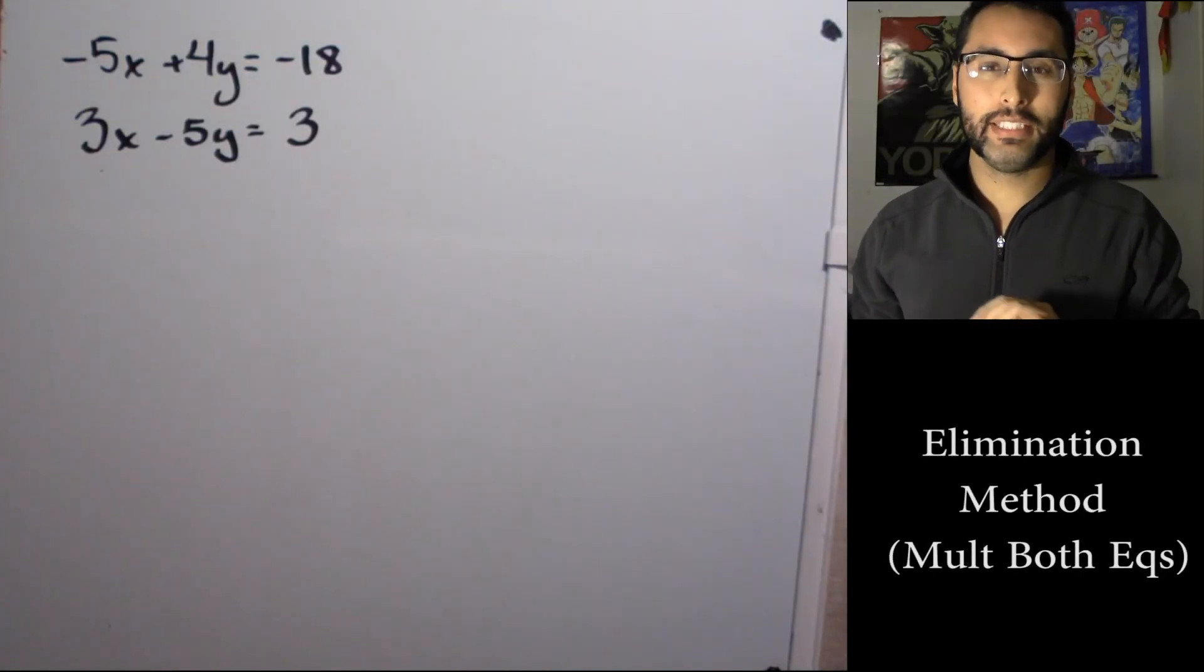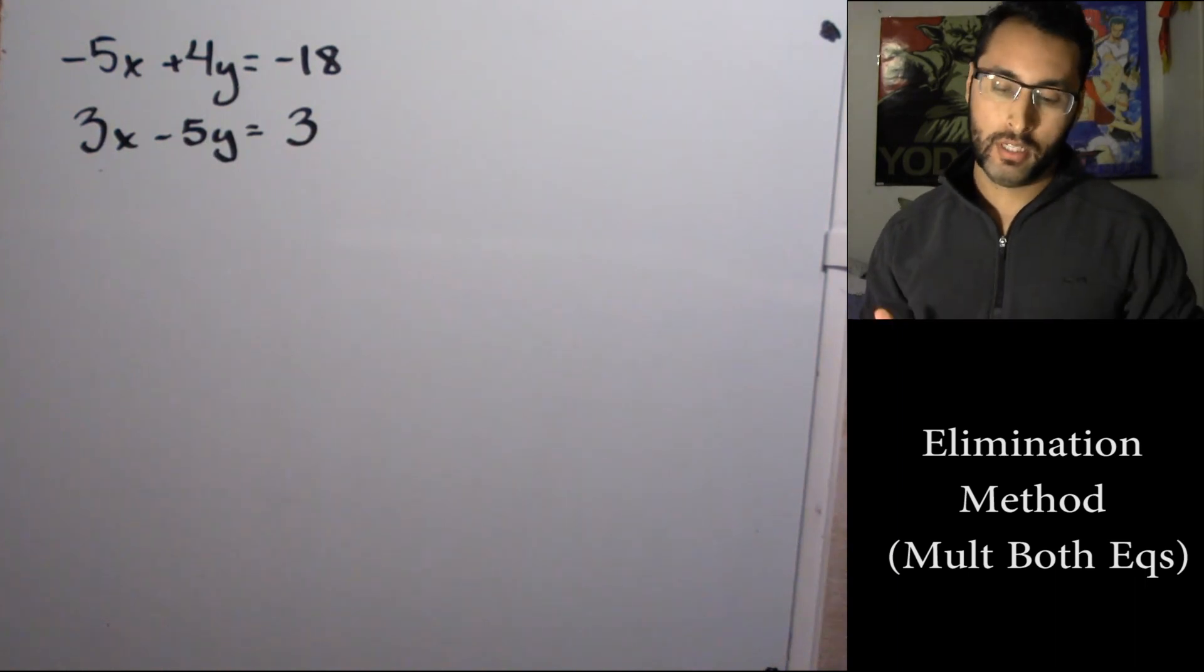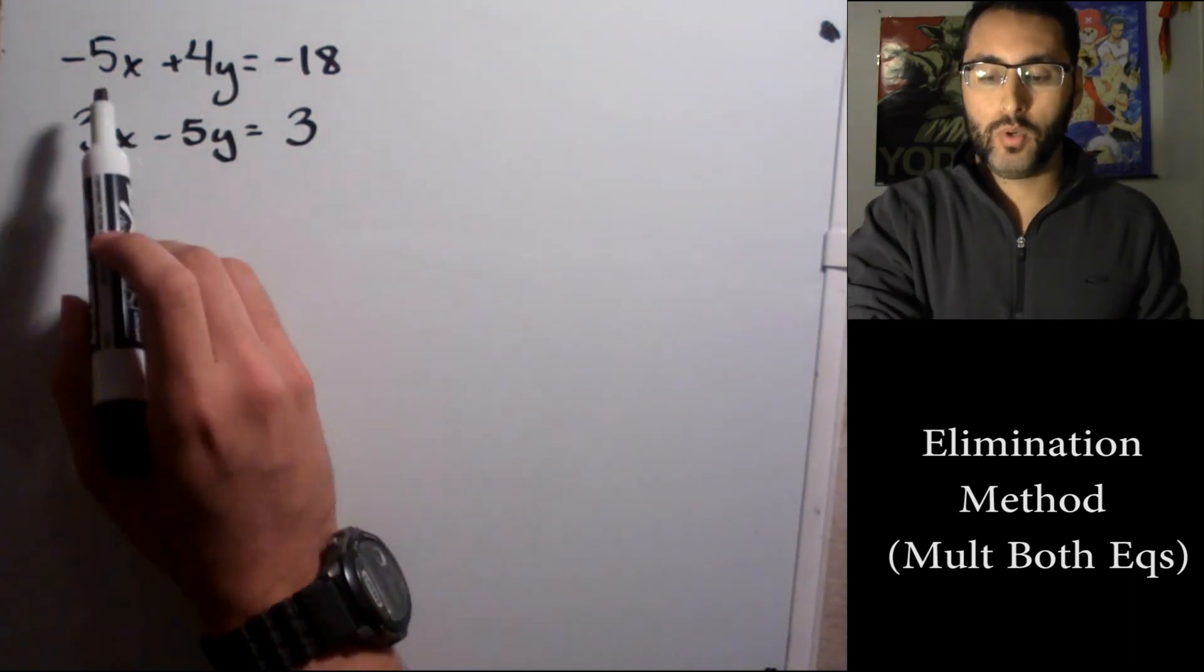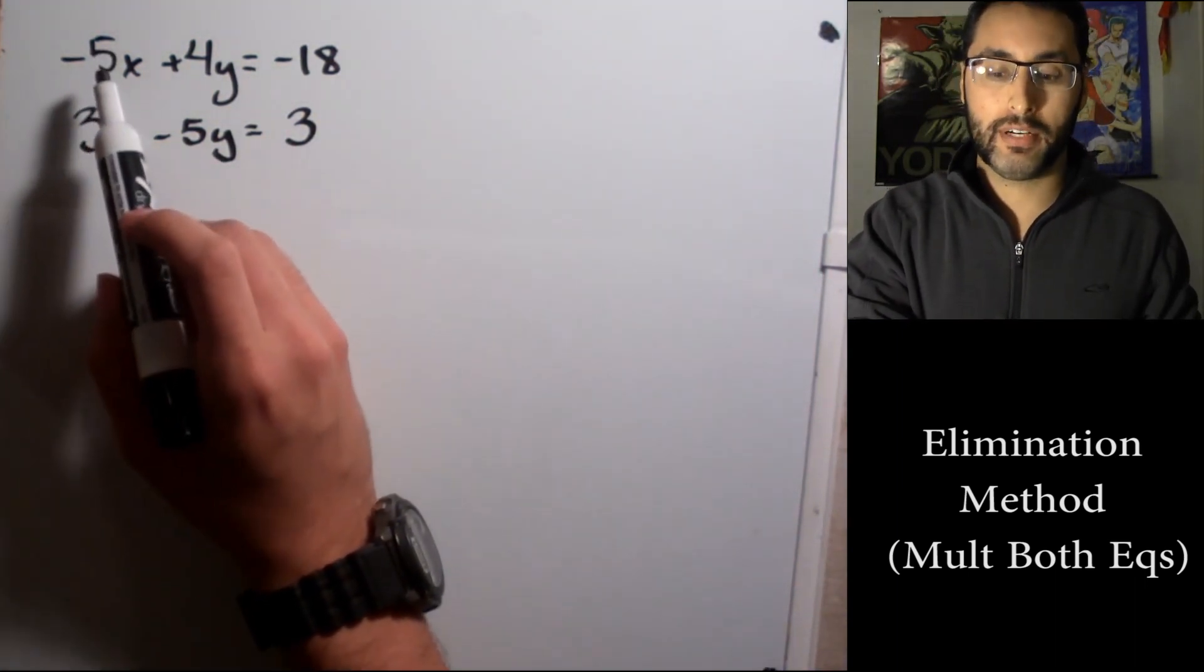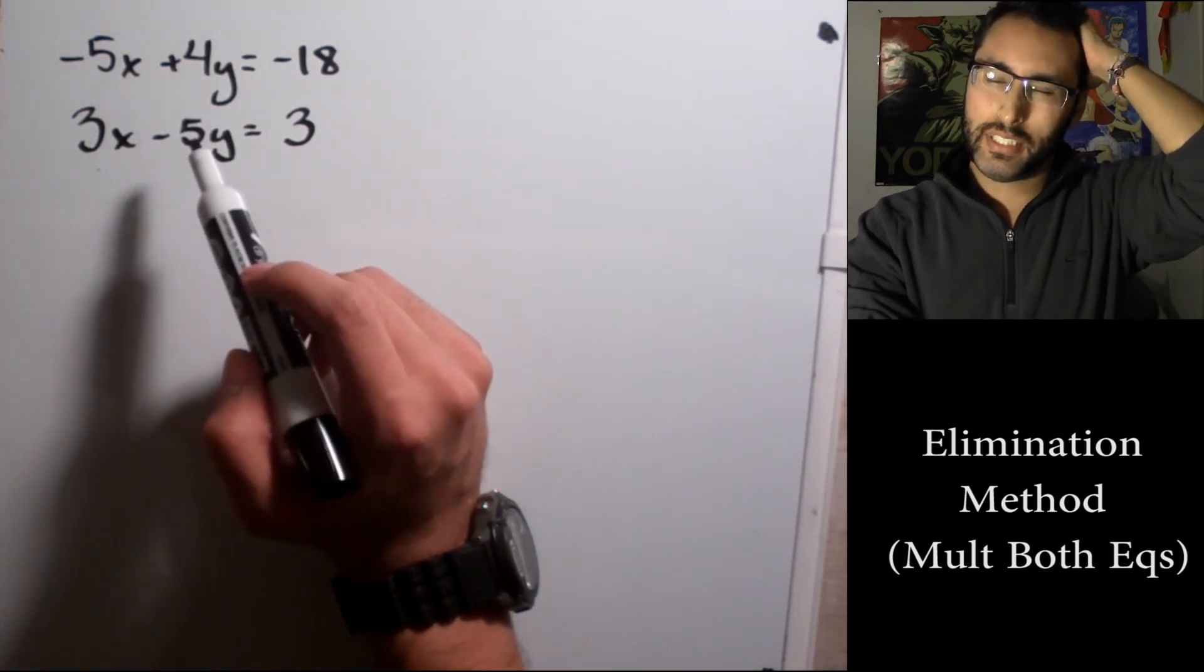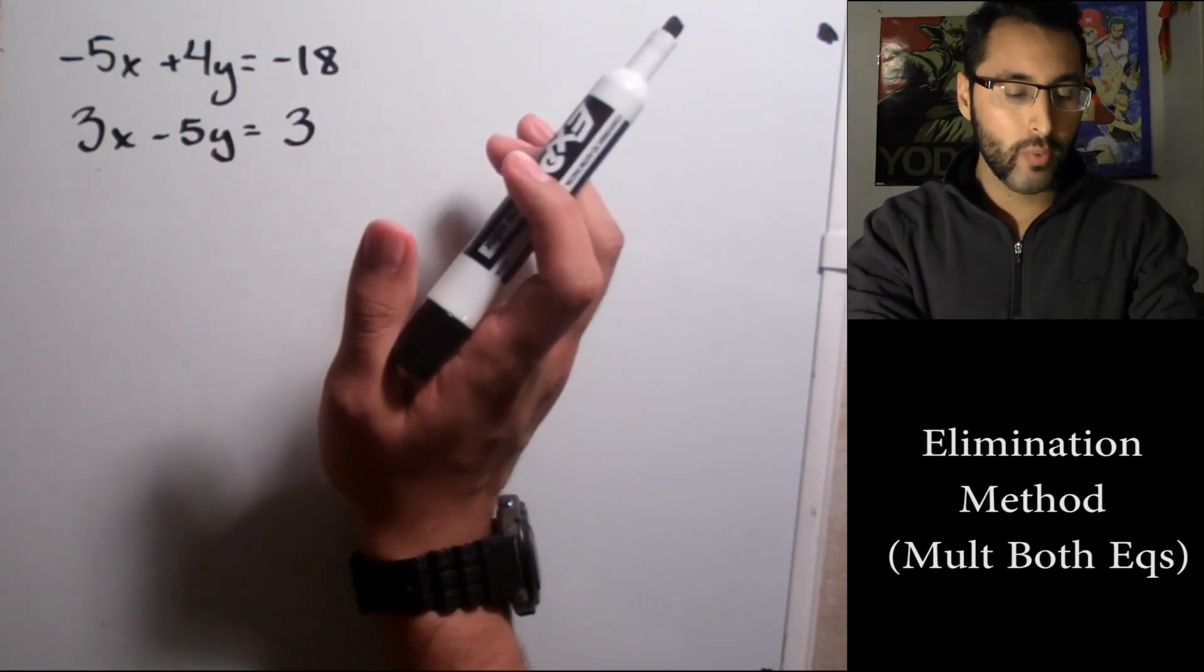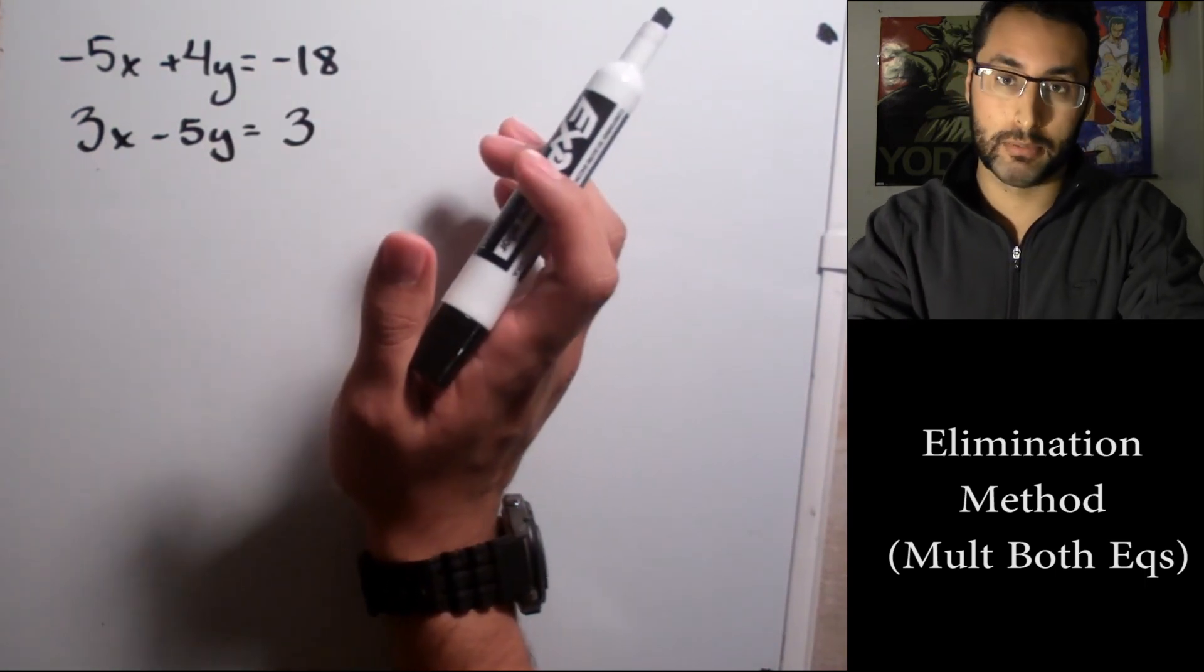Hey class, this video is on elimination by multiplying two equations, so even more difficult now. If we look at our coefficients, for x's we have 5 and 3, and for y's we have 4 and 5. They're not inverses of each other, they're not even the same number, but we can make them the same number.